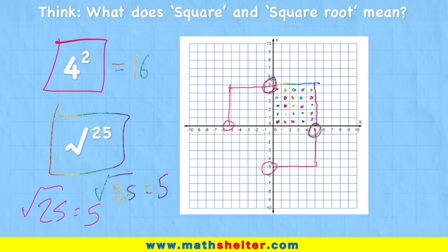But if I build a square over here on the negative, negative quadrant, then on my y-axis I have negative 5, and on my x-axis I have negative 5. So the square root of 25 could also equal negative 5. Just a little caveat there for you to think about.